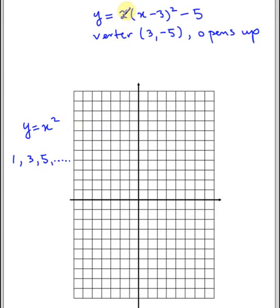So we take 1, 3, 5, 7, 9, and we multiply each term by 2. So the step pattern for this function will be 2, 6, 10, and so on.